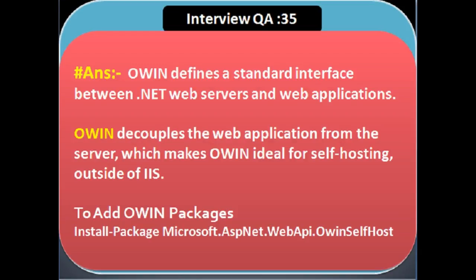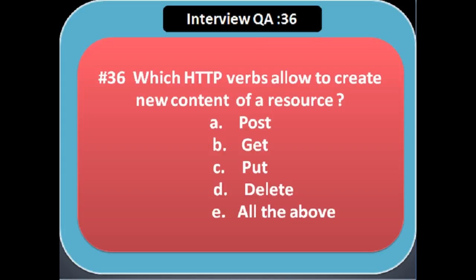OWIN — Open Web Interface for .NET — defines an abstraction between .NET web servers and web applications. OWIN decouples the web application from the server, which makes OWIN ideal for self-hosting outside of IIS. To add the OWIN package, simply install the package Microsoft.AspNet.WebApi.OwinSelfHost, which installs all required OWIN and Web API OWIN self-host packages.